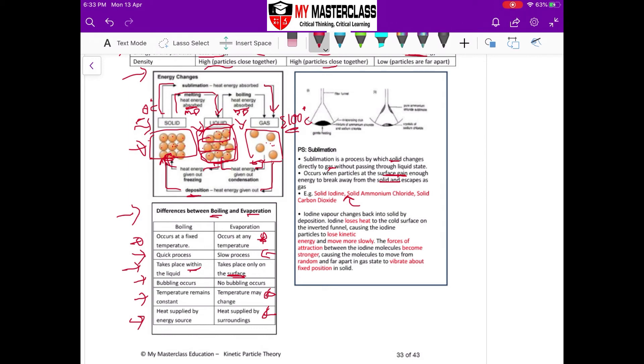The description when we want to describe the change in state using energy: we can say something like this. We are describing the deposition, so iodine vapor changes back into solid. During deposition, what happens? The iodine loses heat to the cold surface, and then the iodine particles lose kinetic energy.